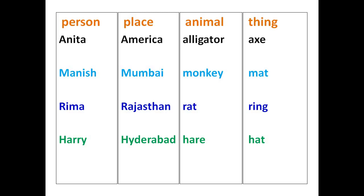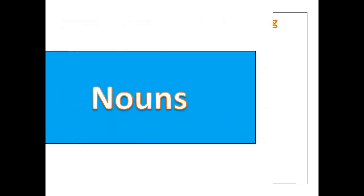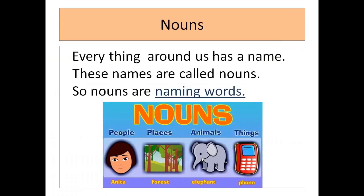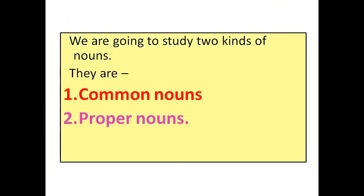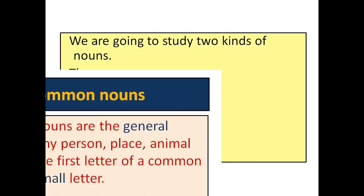All the names together are called Nouns. Everything around us has a name. These names are called Nouns, so Nouns are naming words. We are going to study two kinds of nouns: Common Nouns and Proper Nouns.